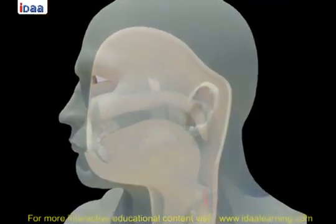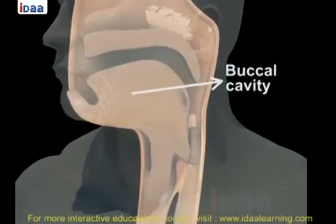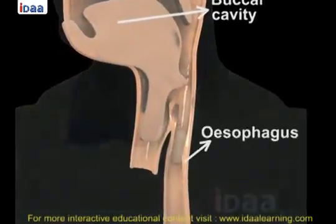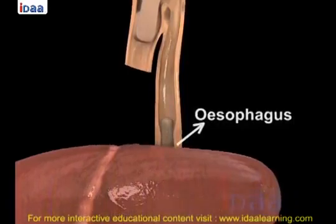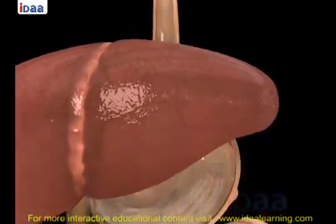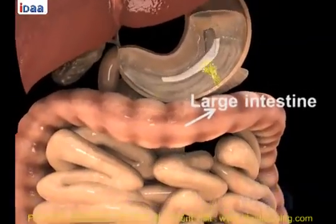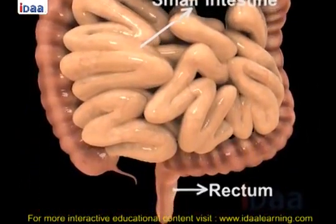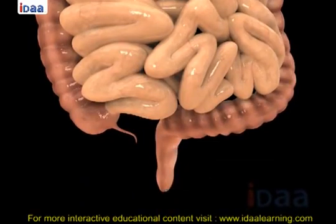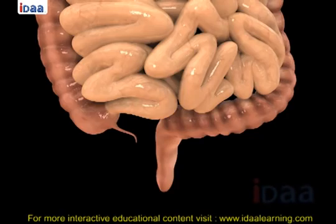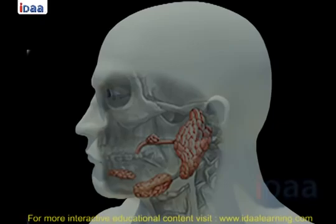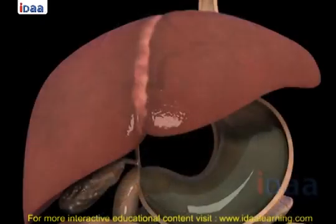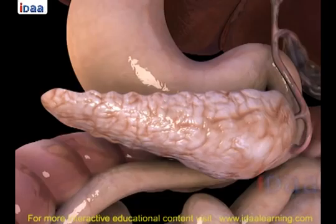The parts of the alimentary canal are the buccal cavity, esophagus, stomach, large intestine, small intestine, rectum, and anus. The food gets digested gradually as it passes through the various parts of the tract. Digestive juices secreted by the salivary glands, liver, and pancreas also aid digestion.